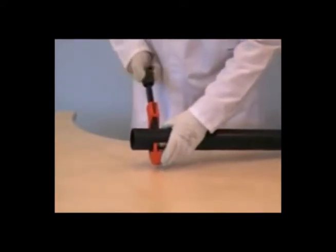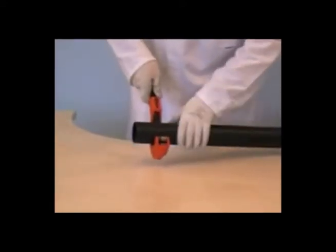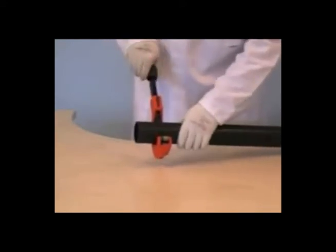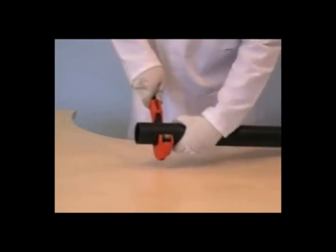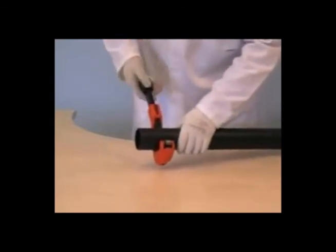It's important to make sure the pipe is cut clean and square. A wheel cutter is best for this job. However, as an alternative, a carpeted saw could be used, but this would create swarf. A saw is often used on larger diameter pipes.